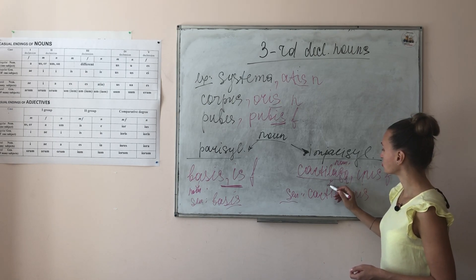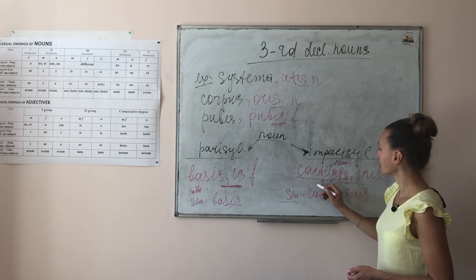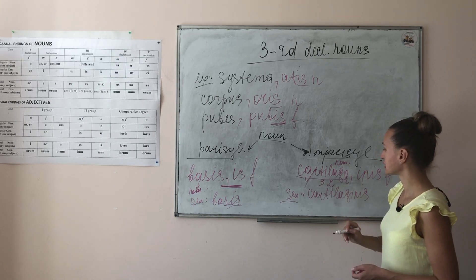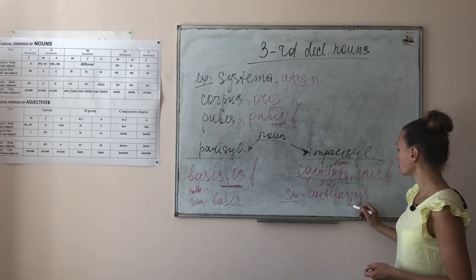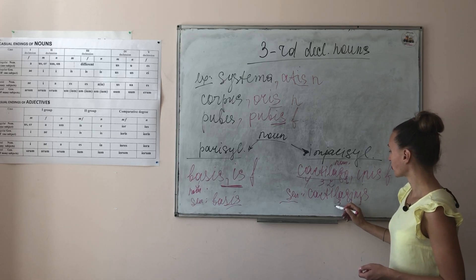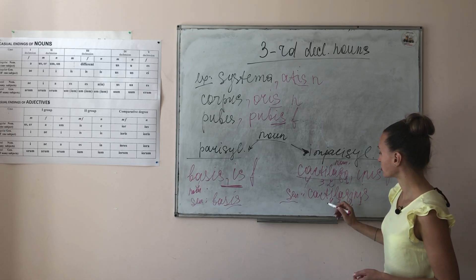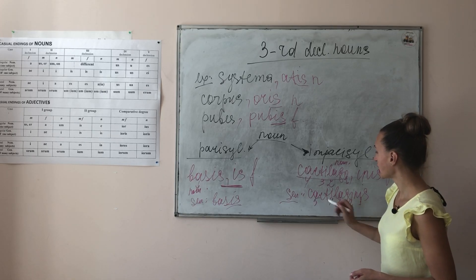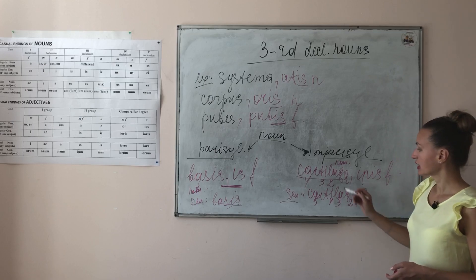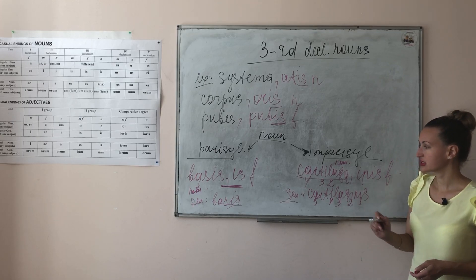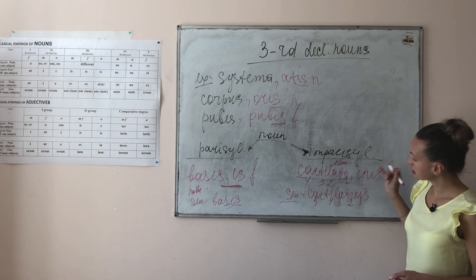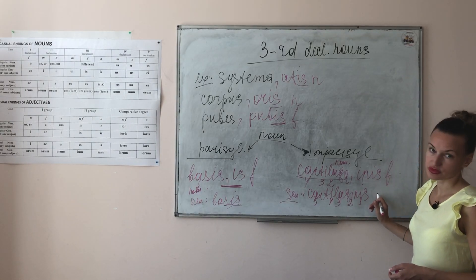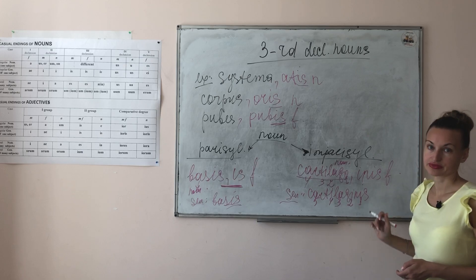We have one, two, three, four syllables in the nominative, and one, two, three, four, five syllables in the genitive — they are different. That is why these words are imparasyllabic.